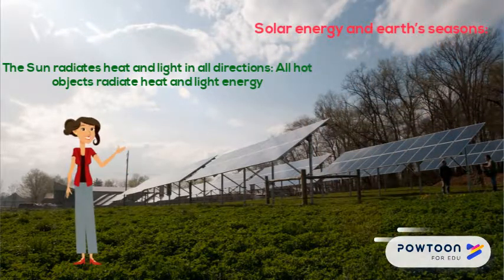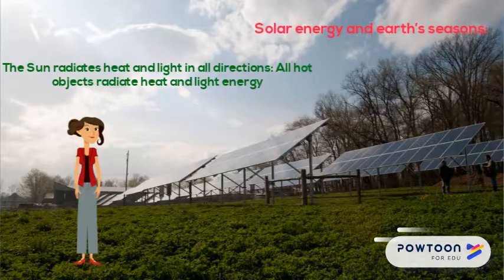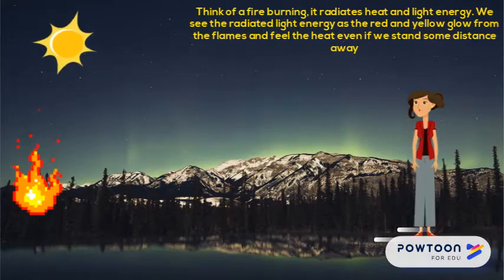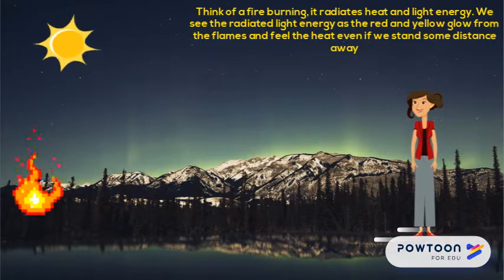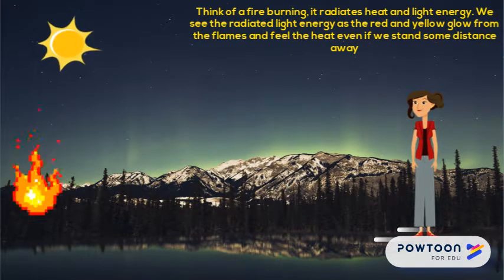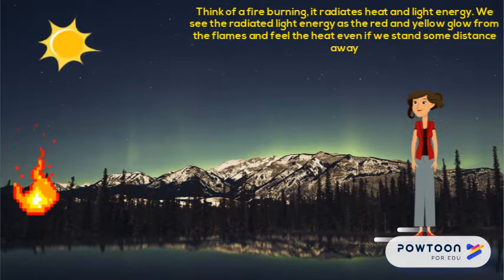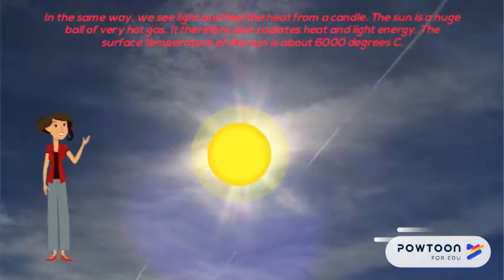The sun radiates heat and light in all directions. All hot objects radiate heat and light energy. Think of a fire burning — it radiates heat and light energy. We see the radiated light energy as the red and yellow glow from the flames, and feel the heat even if we stand some distance away. The heat and light energy from the fire are transferred to us by radiation.